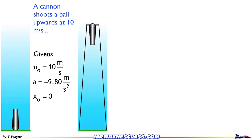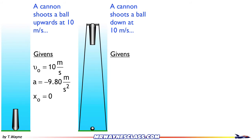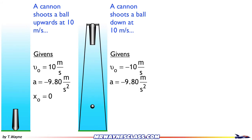Now let's consider a cannon held up high and aimed downwards. The word problem would say: a cannon shoots a ball down at 10 meters per second. Here's what the animation looks like for that problem. In the list of givens, since the ball initially goes down, it's moving in the negative direction — so the initial velocity is negative 10 meters per second. The acceleration due to gravity is still negative 9.8 meters per second squared, always going down. The initial position x-naught equals zero, where the motion starts — up in the air where the cannon is — making the math easy by setting that equal to zero.